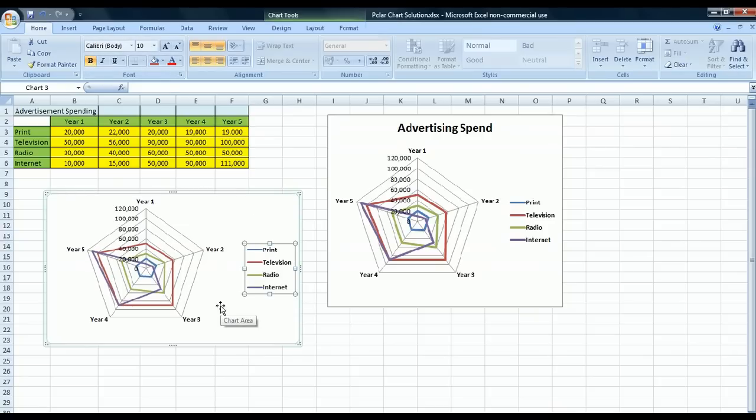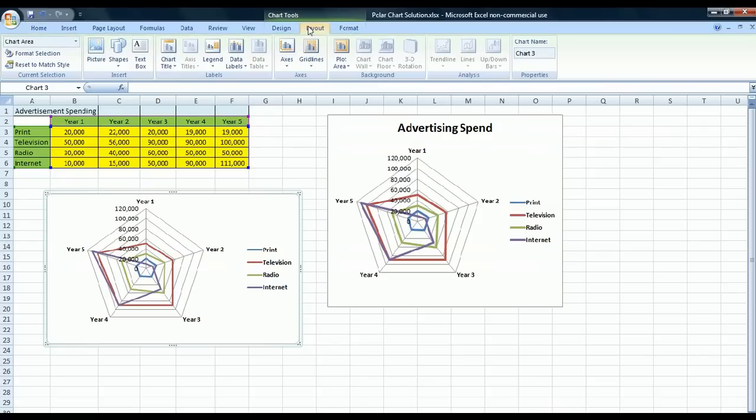So one other thing now we want to do is we want to insert a heading. So what we can do in this case is we can go into our Chart Tools up here, and we have Design, Layout, and Format. So if we go into Layout, and we look in here, we have an option called Chart Title.